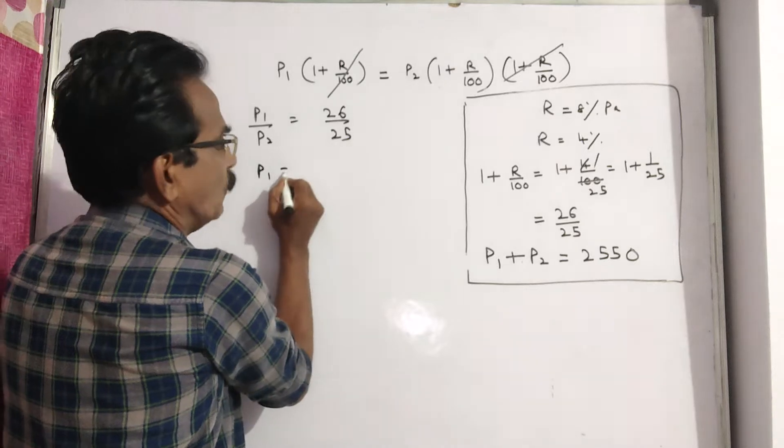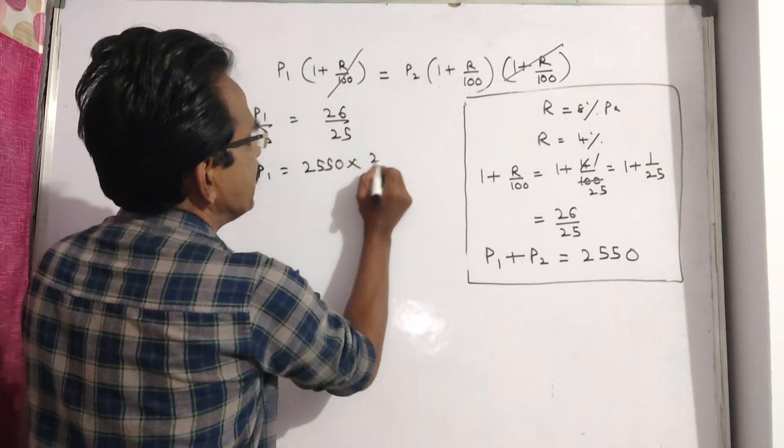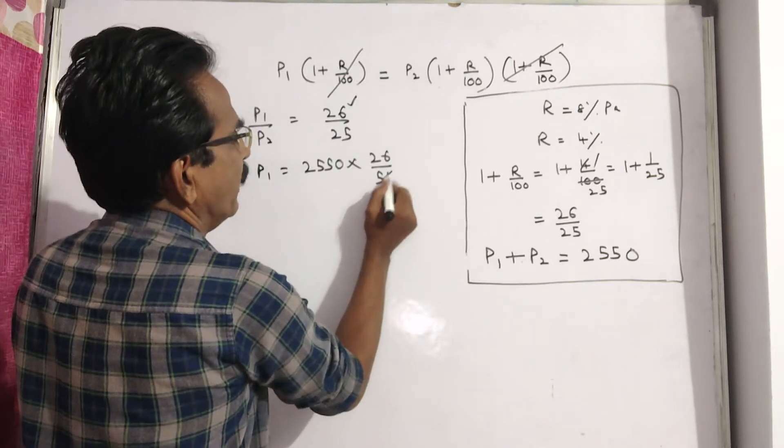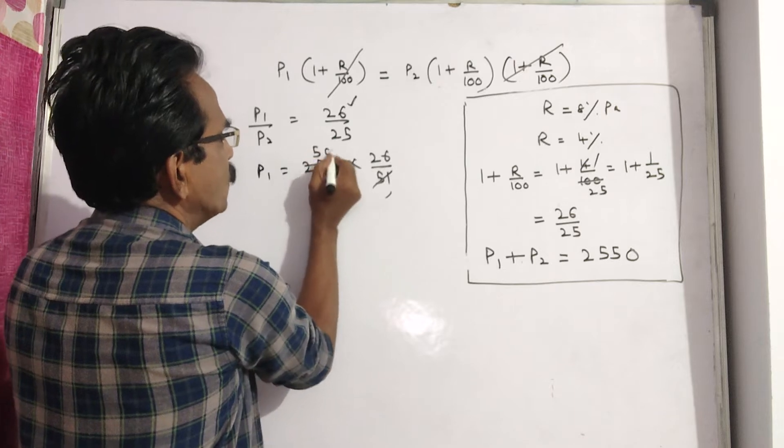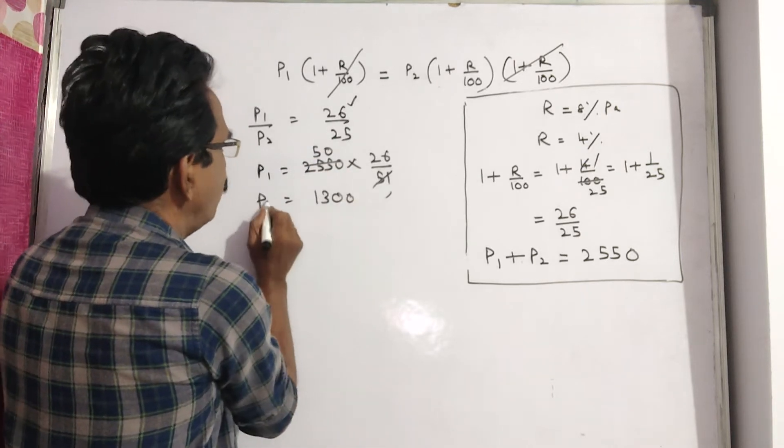Here P1 equals 2550 into 26. We want P1. 26 by 26 plus 25, that's 51. 51 cancels. So 2650, that is 1300 is the value of P1.